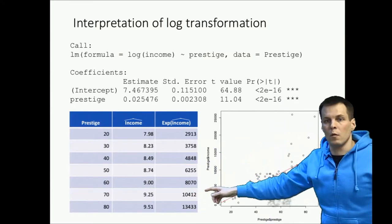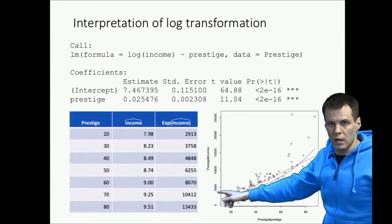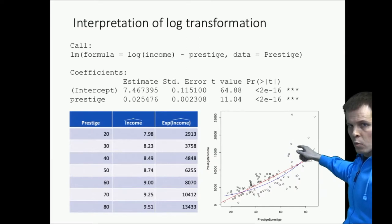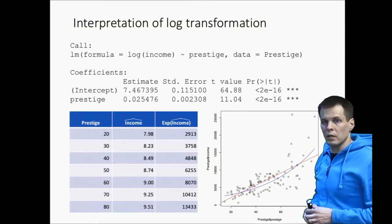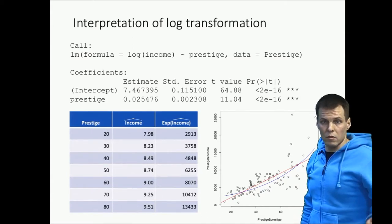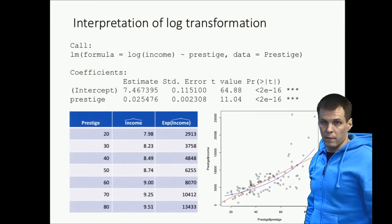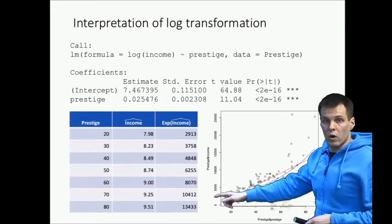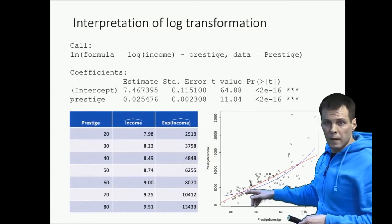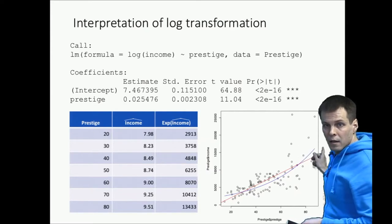Then we have, we plot the data. So we plot these exponential logs of predicted logs of income here. And as a function of Prestige, we get this curve. So whenever you don't know how to interpret a particular regression estimate that has been calculated based on some transformation, one very good way of doing that is to plot the effect. You can also plot the linear model effects only, and then you can compare which one looks more reasonable. Here the blue curve, the log transformation results look a lot more reasonable explanation for the data than the red line.